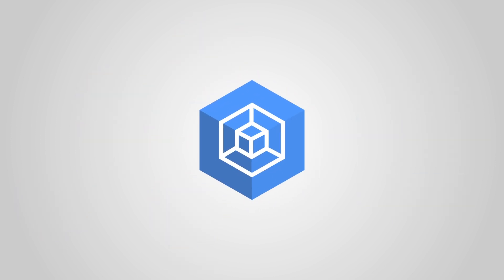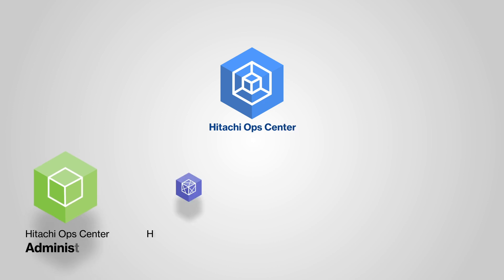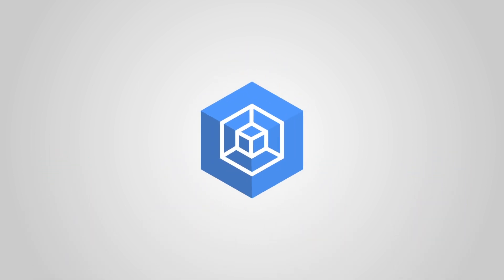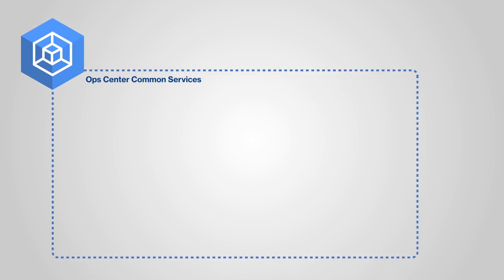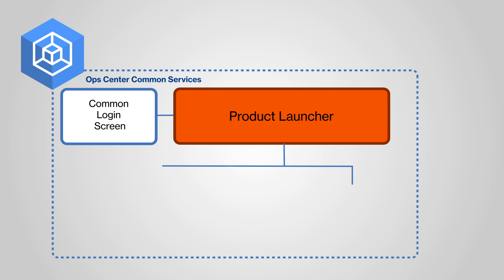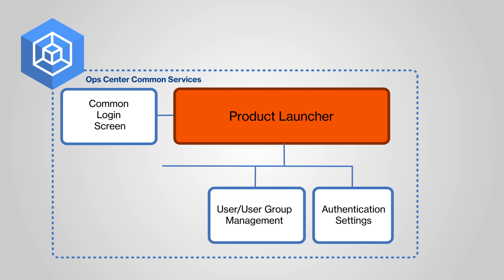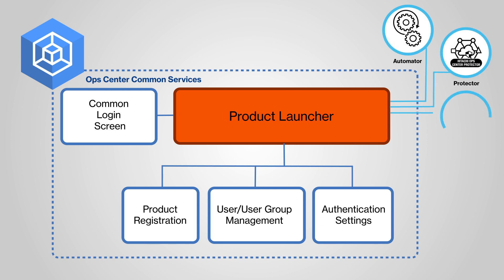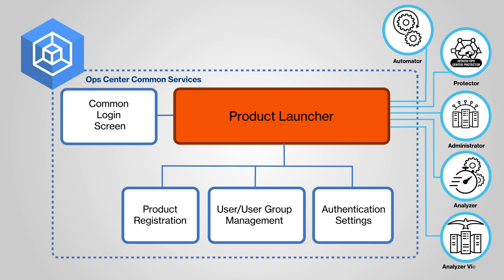Hitachi Ops Center is a centralized AI-driven storage management suite that provides advanced management, analytics, automation, and data protection for modern VSP-powered infrastructures. Hitachi Ops Center Common Services provides an integrated configuration environment and a common login screen. Users and user group management is centralized along with authentication settings such as Active Directory integration and product license key registration. Therefore, users can launch registered products without an additional login action.